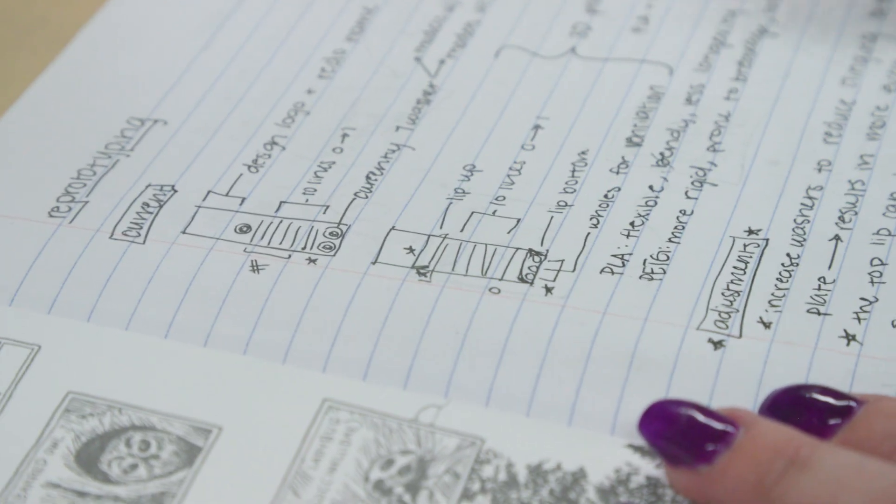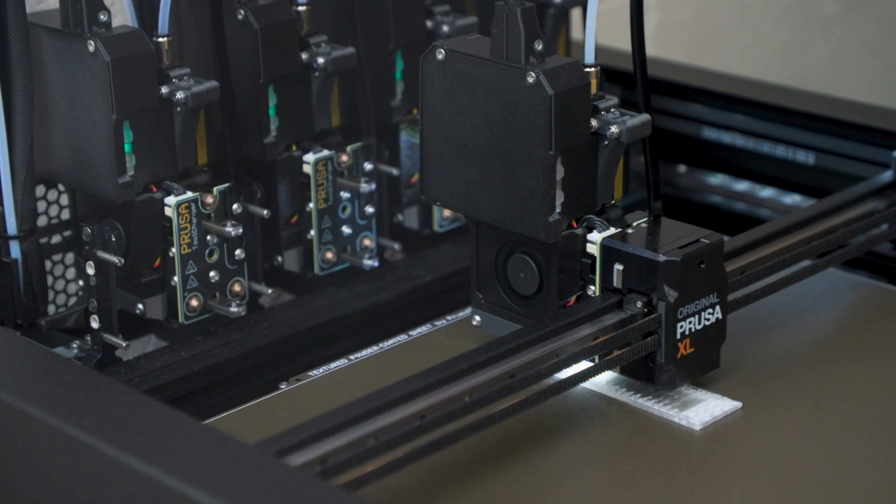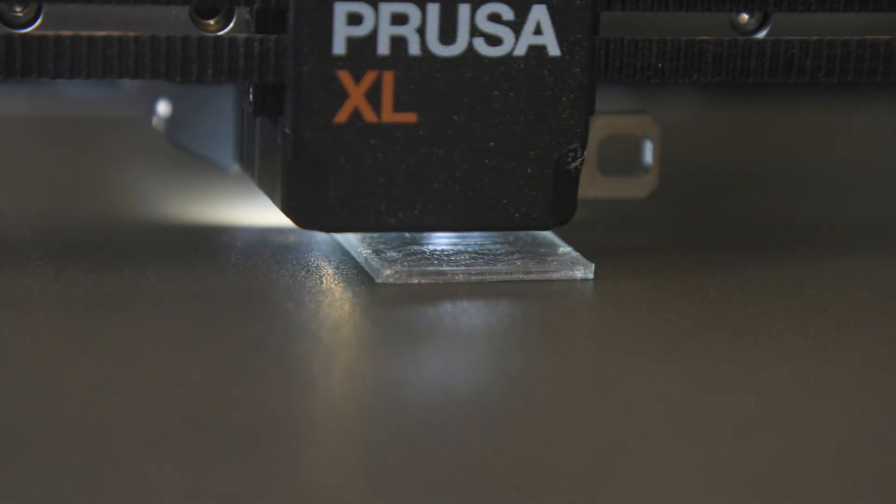She needed some guidance on how to get started. Ellie learned how to do CAD design, making a 3D model that she could take and then 3D print on the printer that she also helped build.